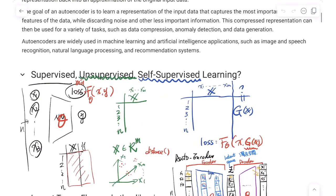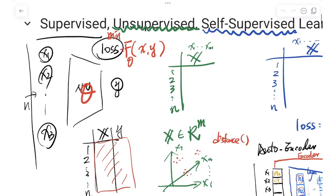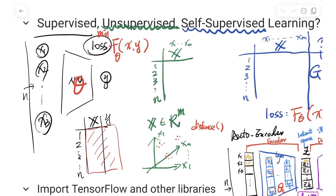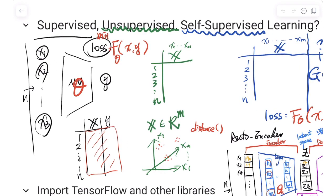Usually when we talk about learning, we divide different architectures into different categories. The first one is called supervised learning. Looking at this figure, the black one — usually we will have data right here represented by the big X.